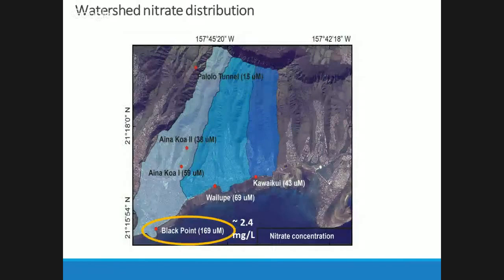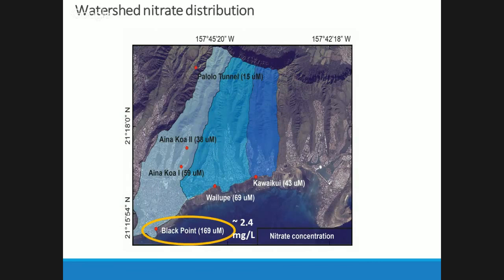This map shows the nitrate evolution within the Black Point watershed itself. Palolo Tunnel, my pristine groundwater end member, was close to 15 micromolar. As I got closer to the development and high OSDS density, I saw a slight increase in nitrate. Then between Inocoa 1 and Black Point, there was a massive jump to 170 micromolar — about 2.4 milligrams per liter. Wailupe was lower at around 70 micromolar, with Kāne'ohe Kai the lowest at 40 micromolar, much more similar to Inocoa 1 or 2.